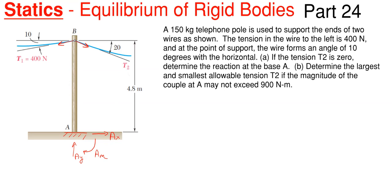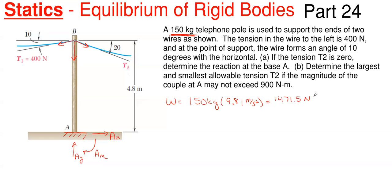If your answers come out positive, you assumed the right direction; if negative, the value is still correct but the arrow is in the opposite direction. Don't forget the weight of the telephone pole: W = 150 kg × 9.81 m/s² = 1471.5 newtons downward.